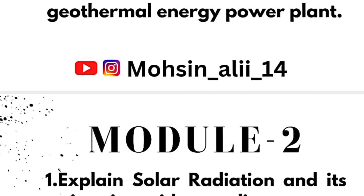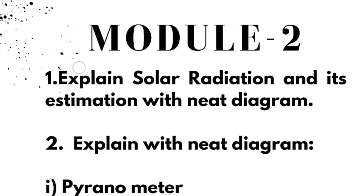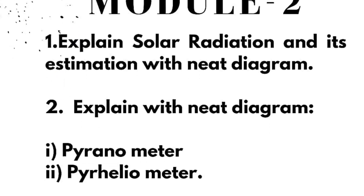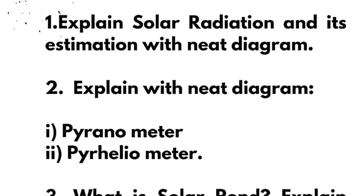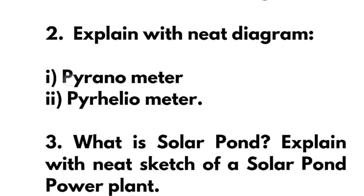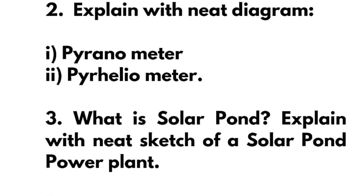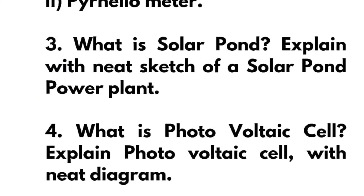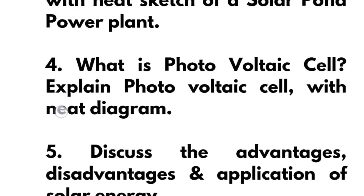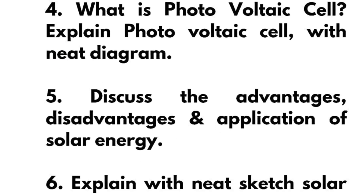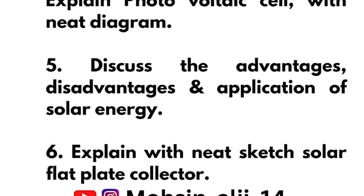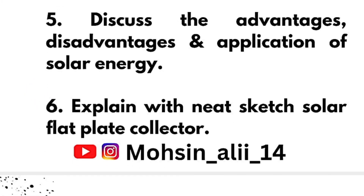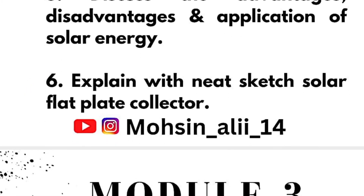In Module 2: explain solar radiation and its estimation with a neat diagram; explain with neat diagram a pyranometer and pyrheliometer — these are super important; explain what is a solar pond and expand with neat sketch of a solar pond power plant; explain what is a photovoltaic cell with neat diagram; discuss the advantages, disadvantages, and applications of solar energy; and explain with neat sketch the solar flat plate collector.